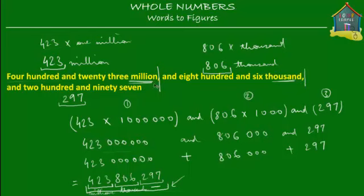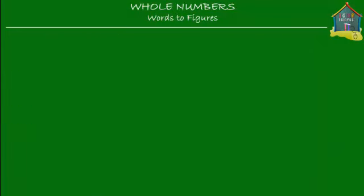When you see a number like this written in words, just mark the keywords 'million' and 'thousand,' and then make sure that for the million you have three bits, for the thousand you have three bits, and for the least important place value you also have three bits. Let me show you another example.